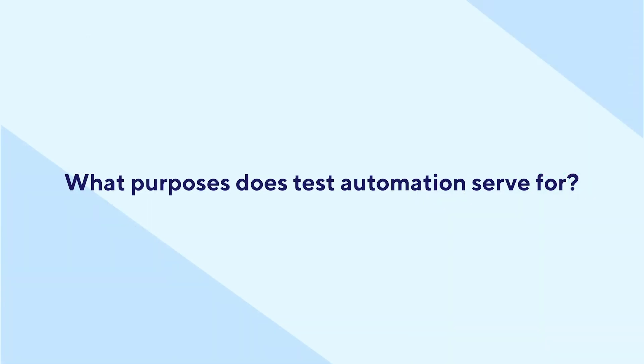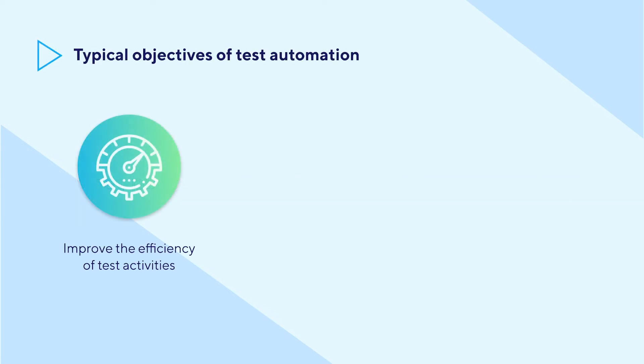Before getting more in-depth, spend 5 seconds thinking about what people use test automation for. Among those purposes, here are three common objectives that most teams define when applying test automation. First, test automation improves the efficiency of testing by supporting manual testing activities throughout the testing process, helping your team reduce the burdens of repetitive work, such as running regression tests when changes appear.